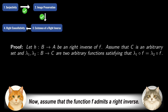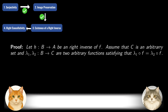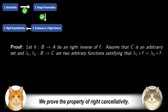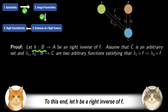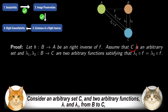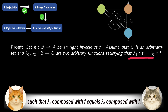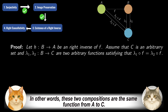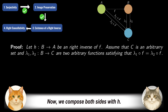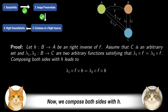Now, assume that the function f admits a right inverse. We prove the property of right cancellativity. To this end, let h be a right inverse of f. Consider an arbitrary set C and two arbitrary functions λ₁ and λ₂ from B to C, such that λ₁ composed with f equals λ₂ composed with f. In other words, these two compositions are the same function from A to C. Now, we compose both sides with h.